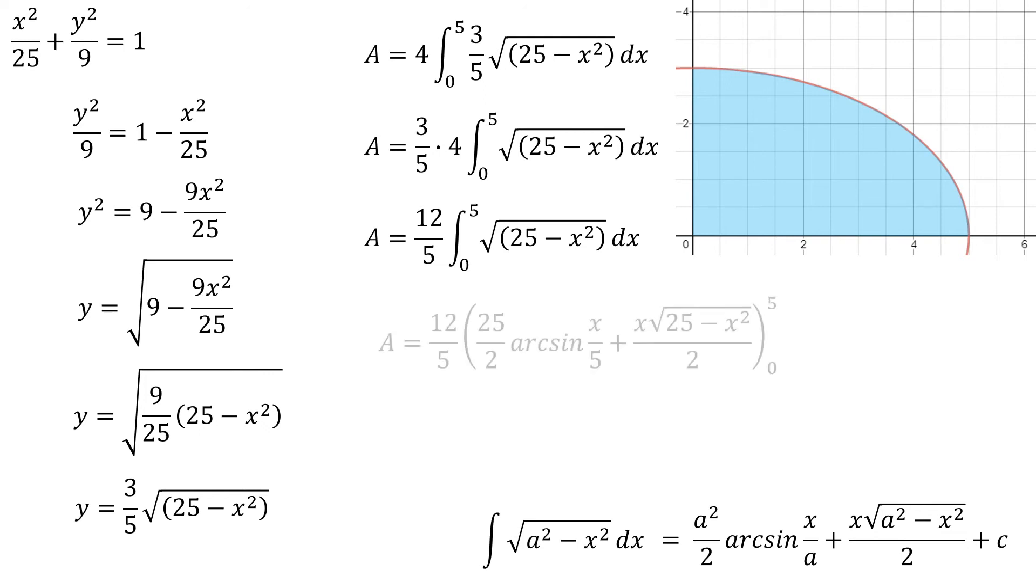So using the table for integration, I can figure out that my a squared over 2 will become 25 over 2. Arc sine of x over a will become arc sine of x over 5. That a squared minus x squared becomes 25 minus x squared. And of course, instead of plus a constant, we actually have the limits of integration of 0 and 5. So we're going to do some plug and chug here.